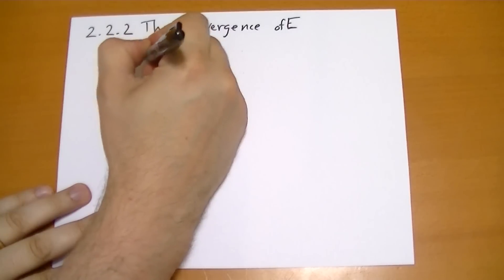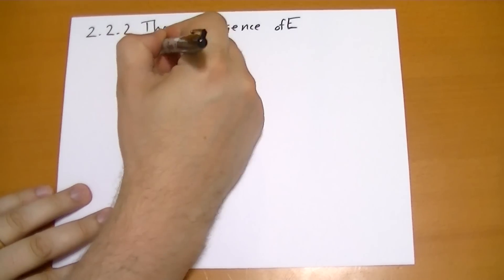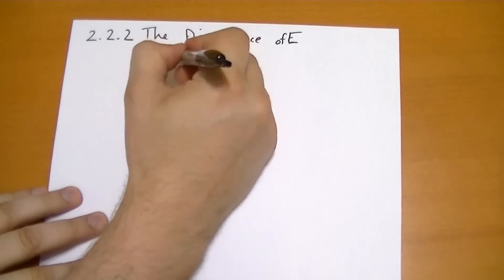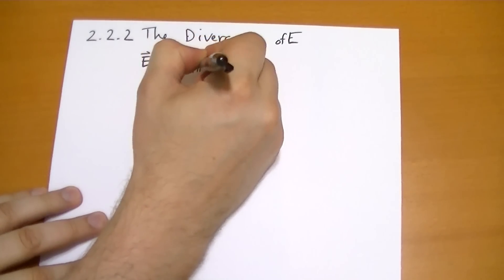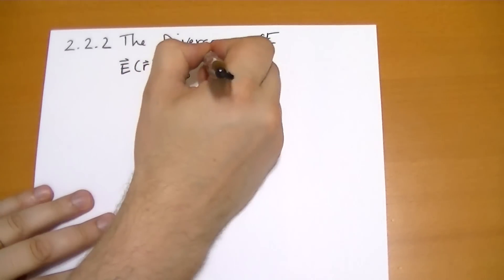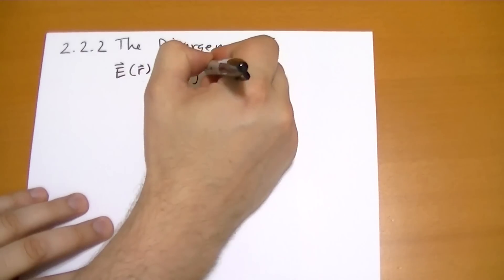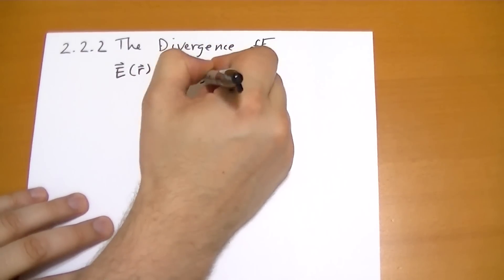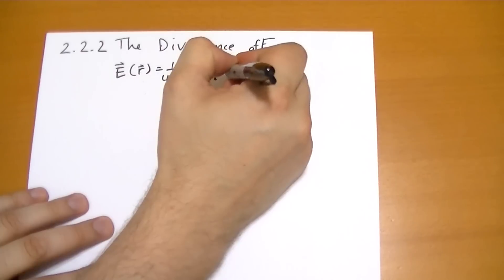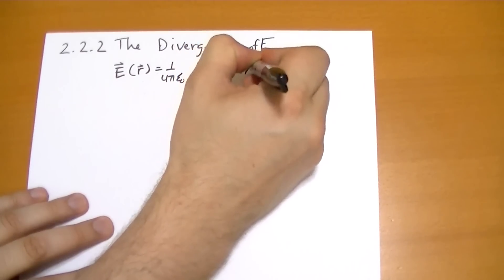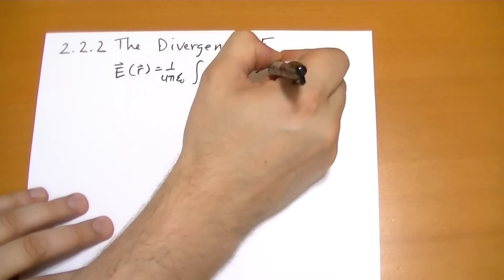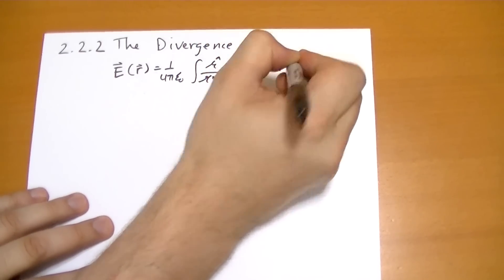So the electric field, in this case, we're going to calculate the electric field at all points r-vector, which is going to be 1 over 4 pi epsilon-naught. And we're going to have an integral that covers r-hat over r-squared, whatever the density is at that point of that integral we want to do, and the volume integral d tau prime.